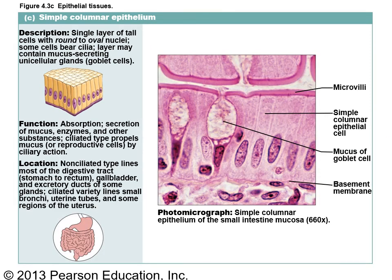Simple columnar epithelium lines the GI tract and has microvilli — little finger-like projections that increase surface area to maximize absorption. You'll also see goblet cells embedded within these passageways; these mucus-producing cells produce the mucus that allows for easier passage of food substances and residue through the GI tract.